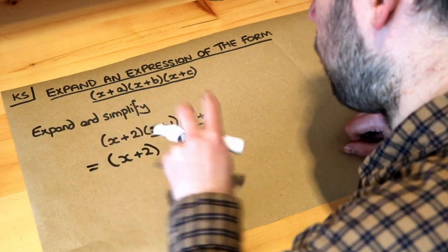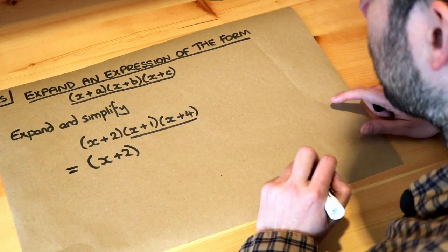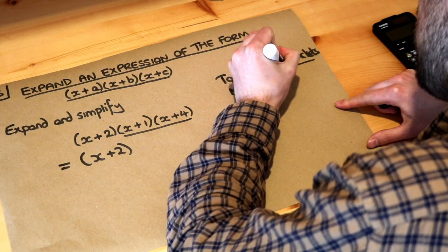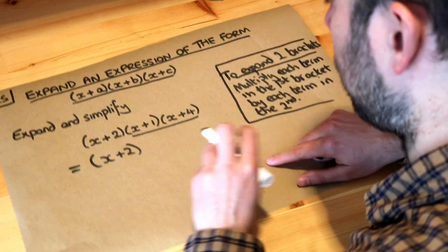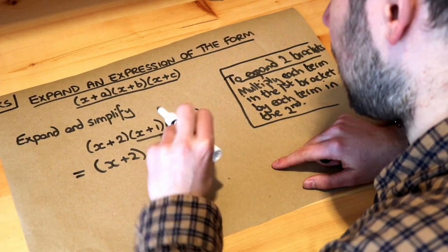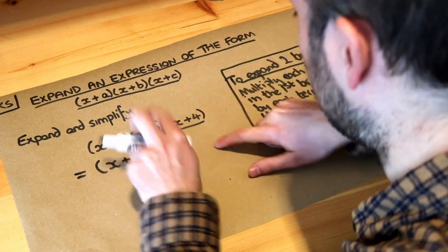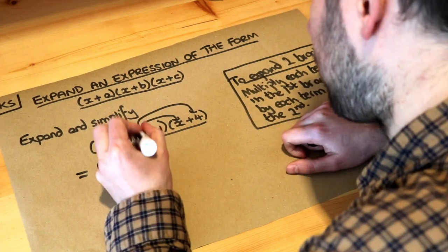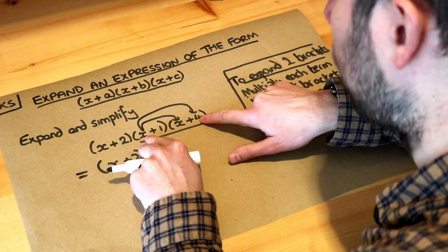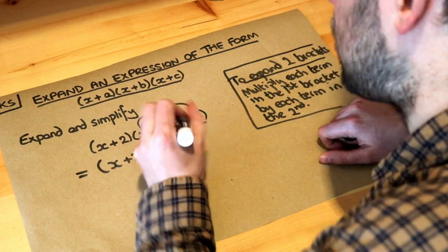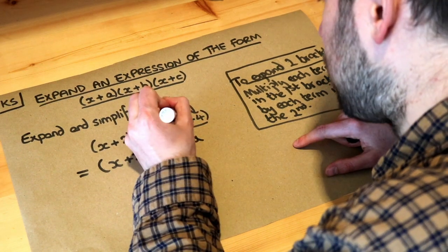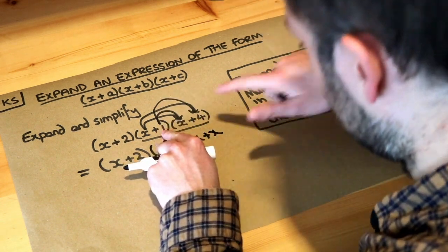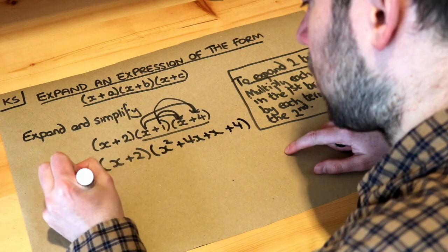We've got the (x+2) still, and I want to multiply these two brackets together. Remember how we multiply two brackets together — multiply each term in the first bracket by each term in the second. So we do x times x, which is x squared, and x times 4, which is 4x. Then we do the 1 times x, which is x, and 1 times 4, which is 4.